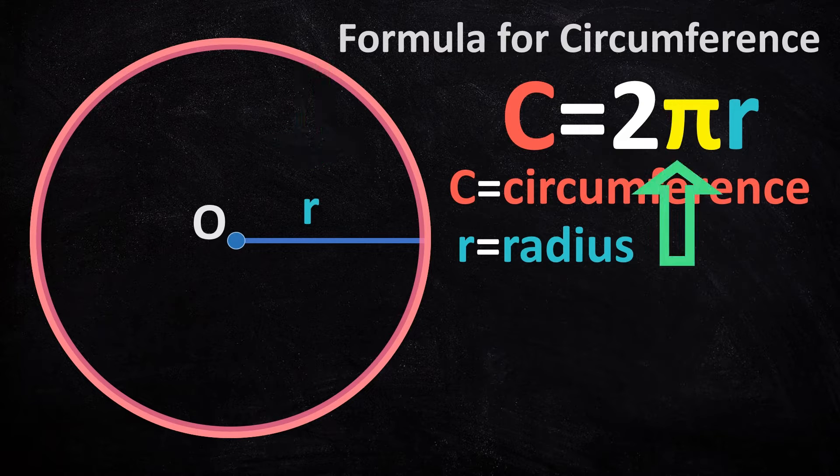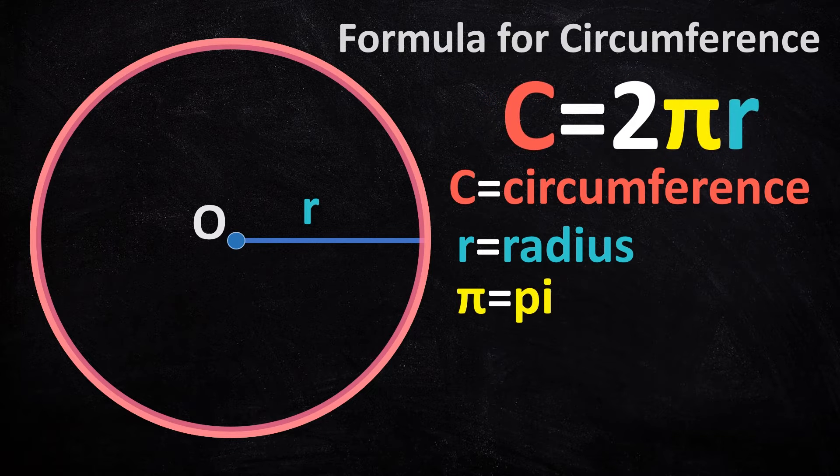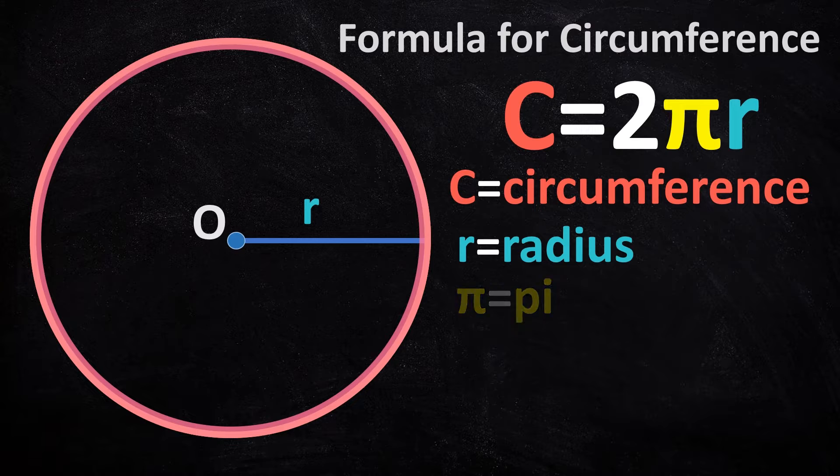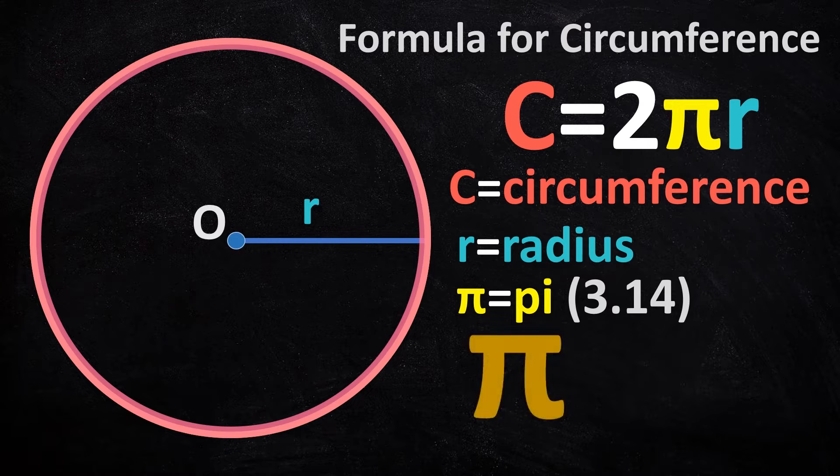And this cute little letter over here is pi, which is a special number used for calculating the circumference of the circle. Pi is approximately 3.14, but you don't need to worry about its exact value right now, because in most math problems, you can simply leave it as pi.